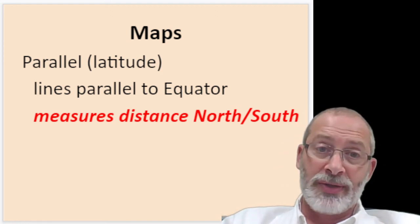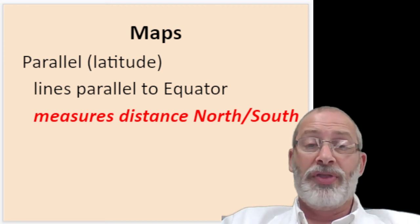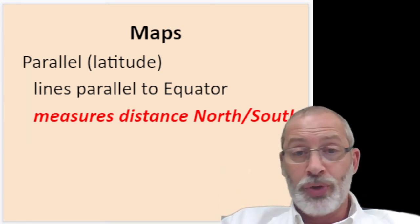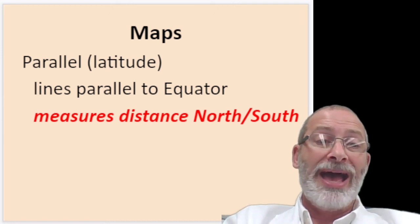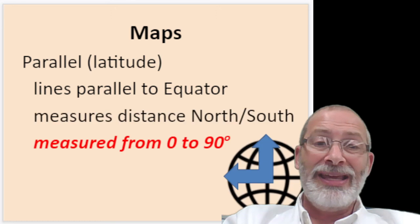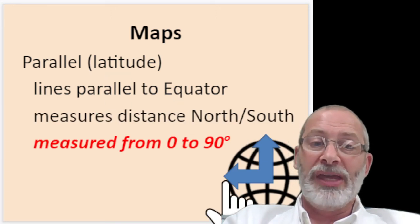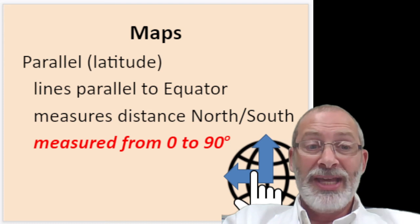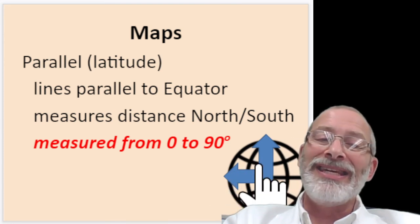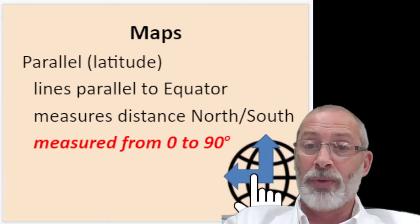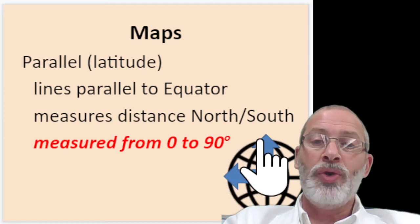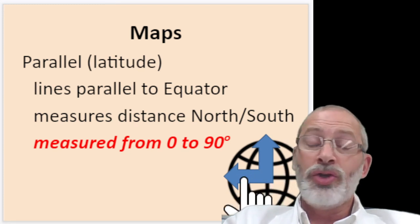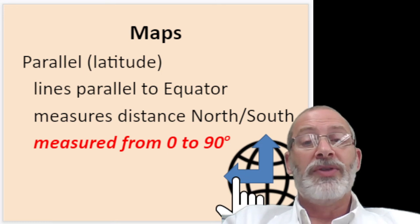From the equator you can go either north to the North Pole or south to the South Pole along lines parallel to the equator — called latitude. Latitude is north or south of the equator. If you think of the Earth as a three-dimensional sphere and cut it in half from the North to South Pole, you get a cross section. From the equator to the North Pole measures 90 degrees, and from zero degrees down to the South Pole is also 90 degrees.